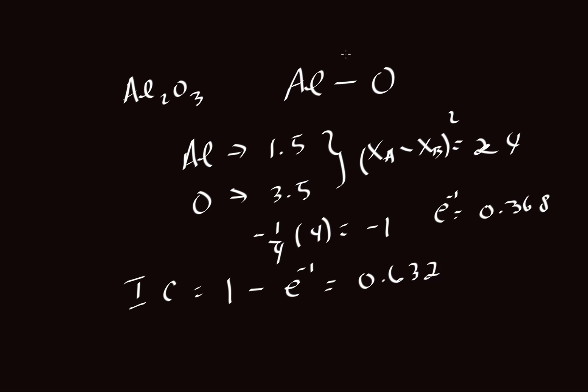So that means the aluminum and oxygen bond are 63.2 percent ionic. And the balance would be covalent. That balance would be this part here, the 0.368 or as a percent, 36.8 percent covalent.